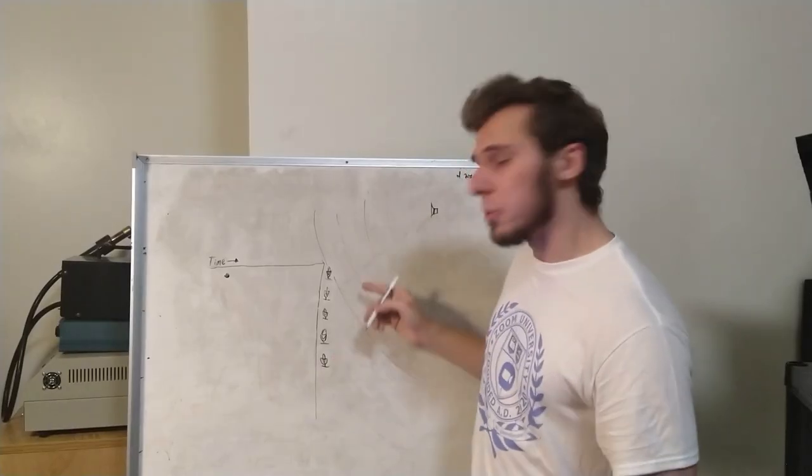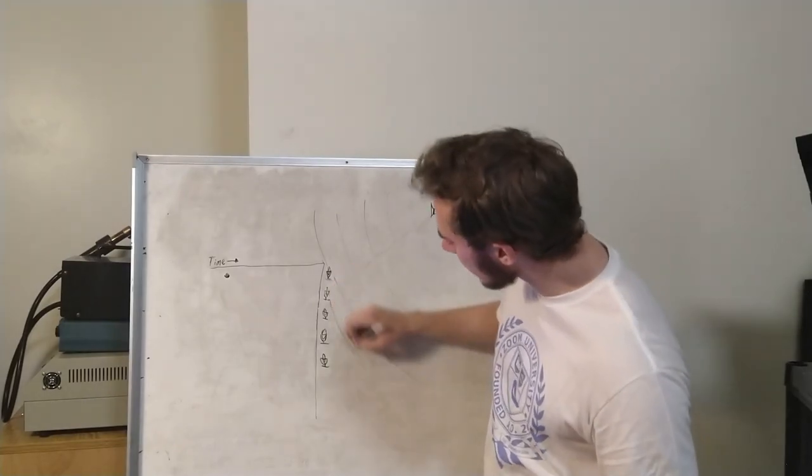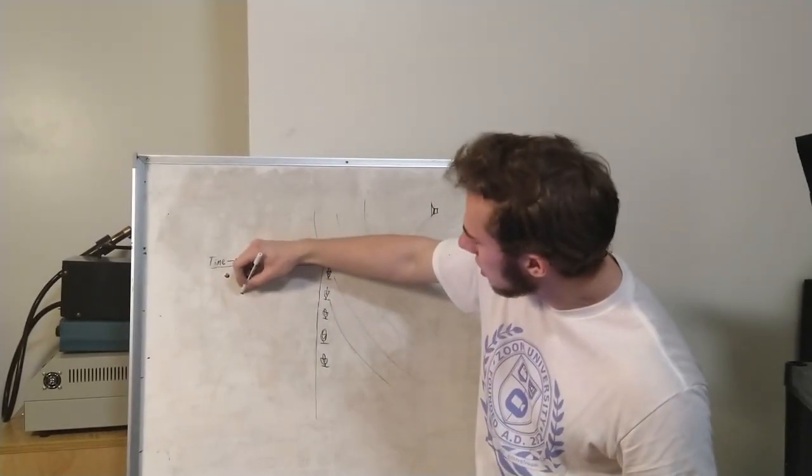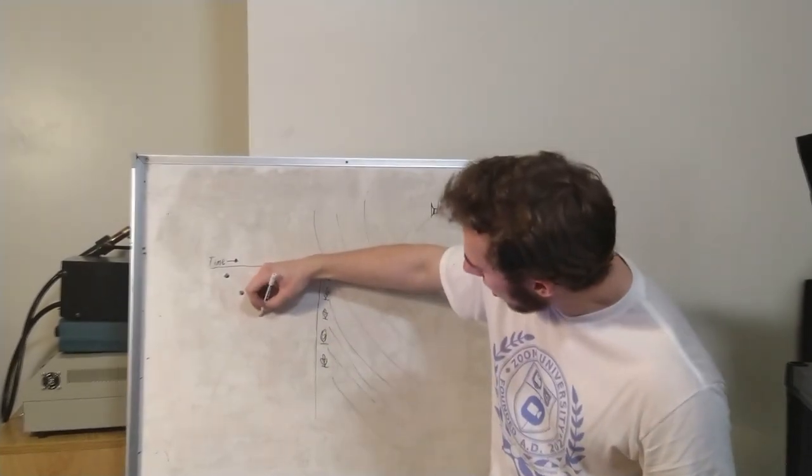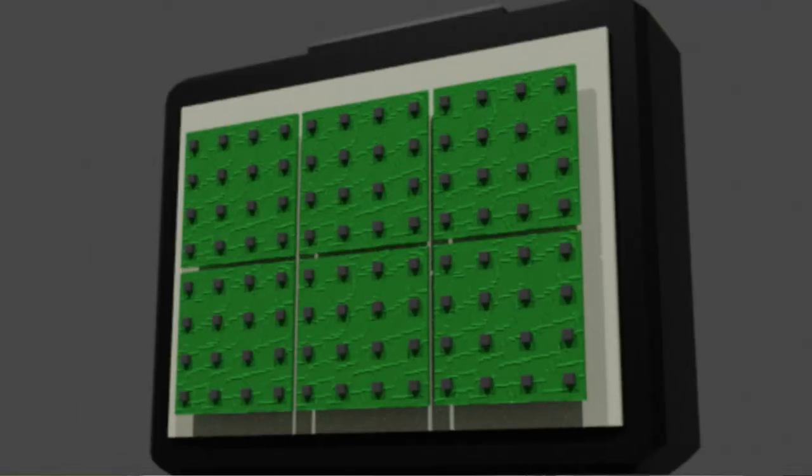So we hit this one first, so we'll draw our first dot there. Then we'll keep moving this sound wave forward. We can see it hits this element next. So we draw another point there. Then it hits this element, then this one, then this one. So we draw our points on the graph there.